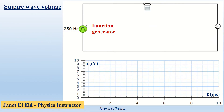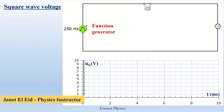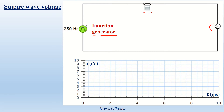Square wave voltage. Look at the closed series circuit. We have a closed switch, a lamp, and a function generator which provides a square wave voltage at a frequency of 250 Hz and at an amplitude of 9 V.